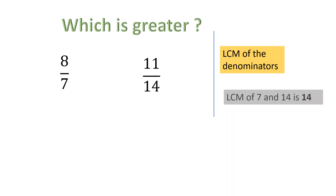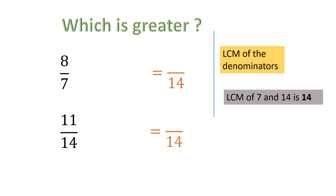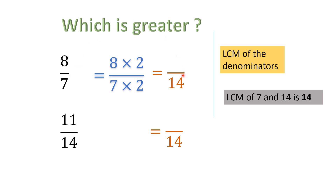The denominators are 7 and 14, so the LCM of 7 and 14 is 14, because 14 is a multiple of 7. Now we convert both fractions to have a denominator of 14. For 8/7, we ask: 7 times how much is 14? — 7 times 2 is 14. So we multiply both numerator and denominator by 2, just like making an equivalent fraction. 8 multiplied by 2 gives a numerator of 16.